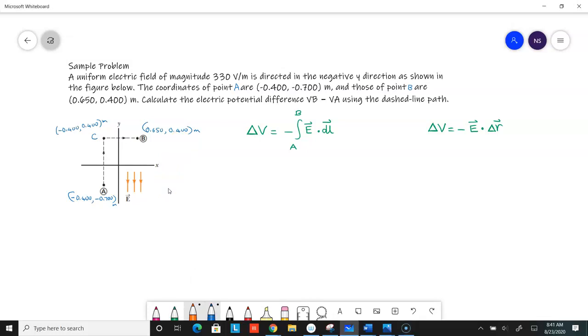This can be written as delta V, which is VB minus VA. We can write it as integral E dot DL, you first go from A to C, and then you go from E dot DL and you go from C to B.